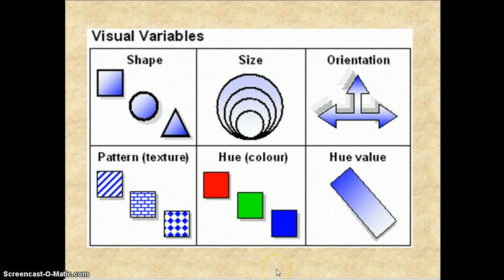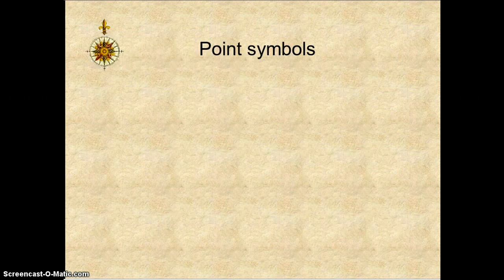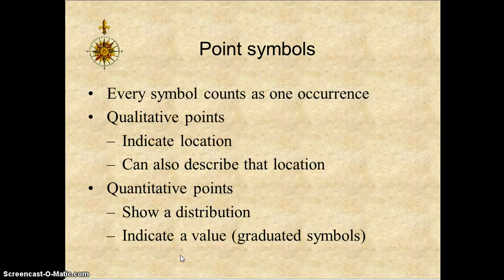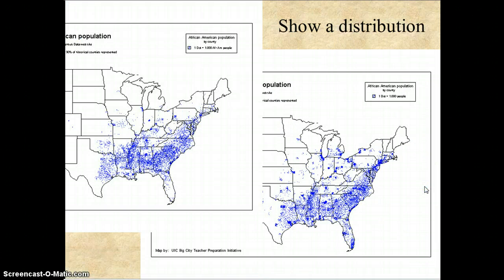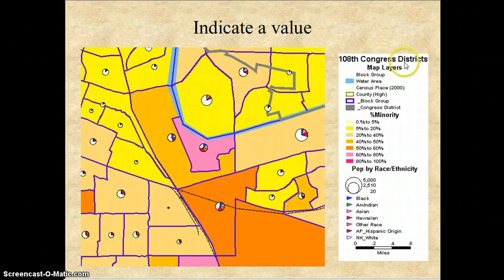Every symbol on a map counts as one occurrence, so it would indicate location and show a distribution. As seen on this map, you are seeing picnic tables, camping, toilets, and bus tour — all found on this map of the National Park. This helps guide people quickly and easily because it's so easy to understand. This map is showing distribution — it's a population map. It can also be used to indicate a value, such as this one depicting the 108th Congress districts and breaking them down racially.